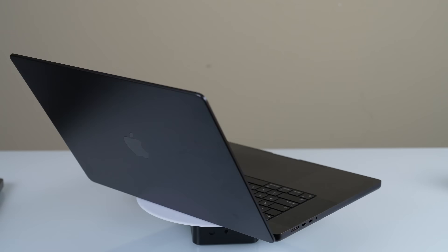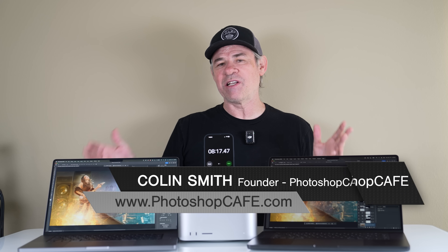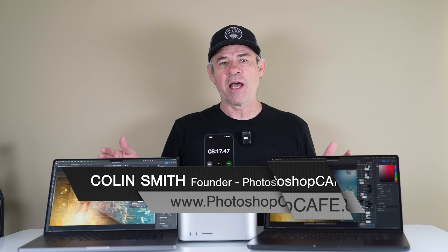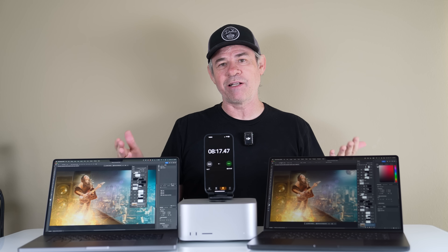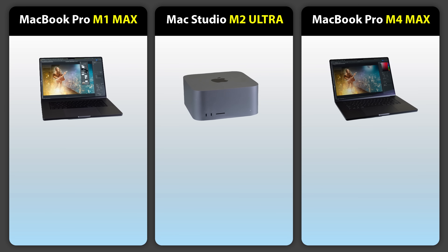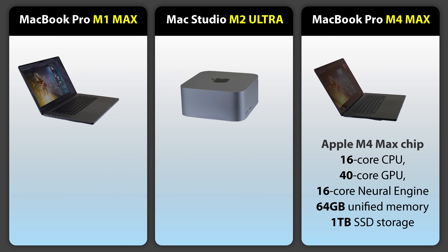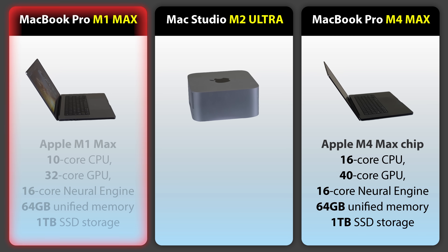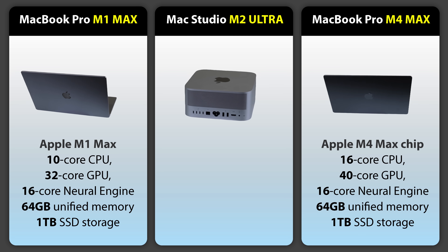Today we're going to have a look at the brand new MacBook Pro M4 and see how good it is with Adobe apps. We're not going to do benchmarks and just look at numbers. What my viewers care about is how these things perform for things like Photoshop and Premiere Pro. We've got the brand new M4 Max — the fastest M4 chip available — running 64 gigs of memory, and we're going to compare this to the M1 Max, also running 64 gigs of memory.